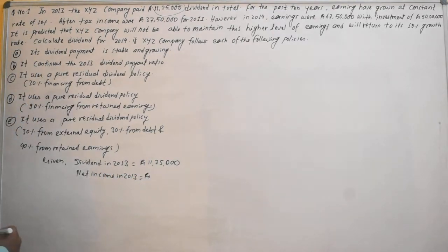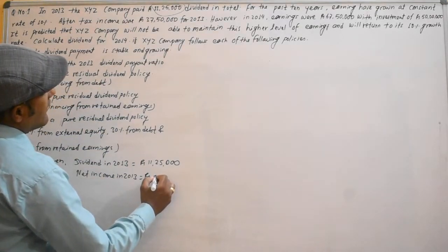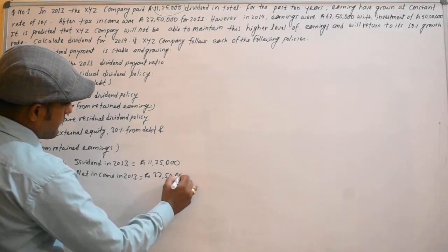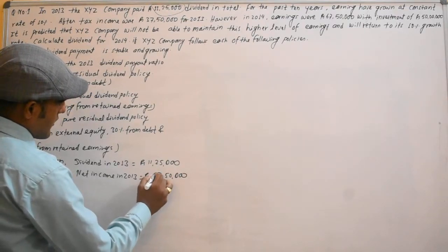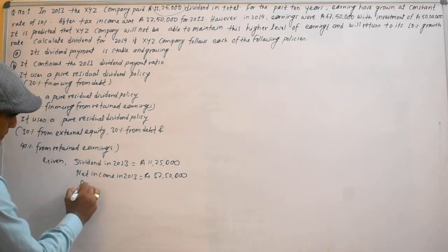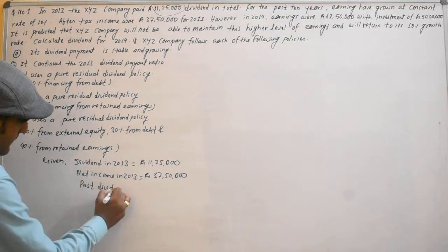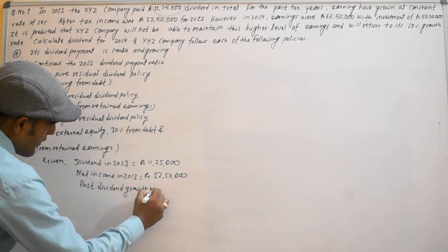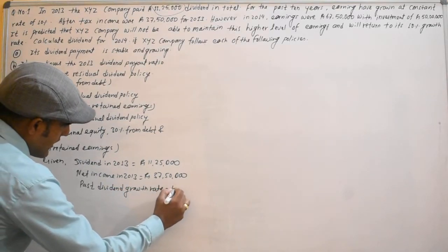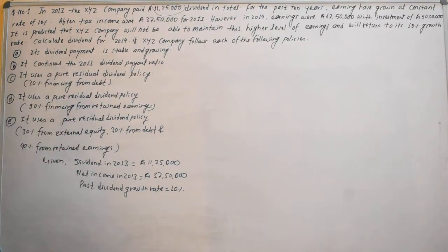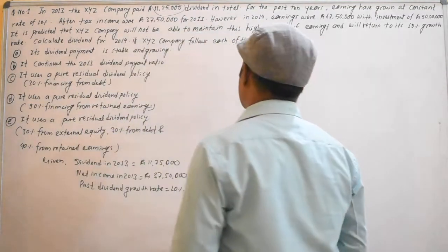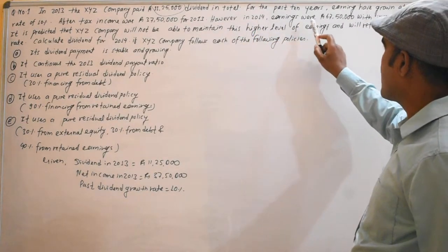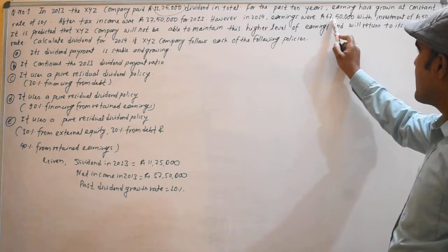In case 2, the net income is Rs. 37,50,000. The growth rate is 10%. However, in 2014, earnings were Rs. 67,50,000.